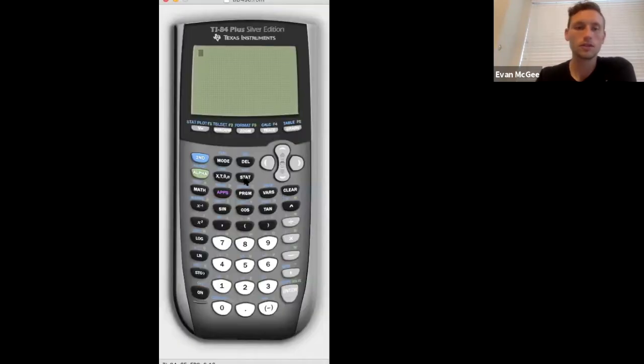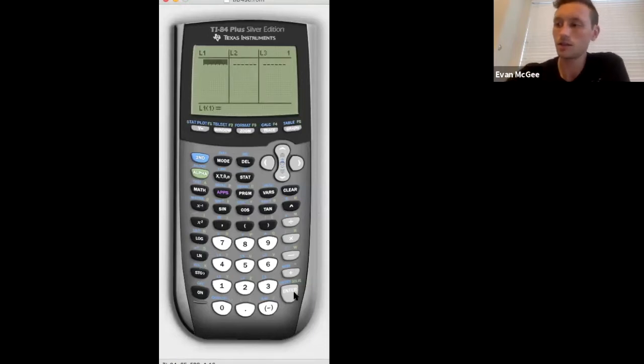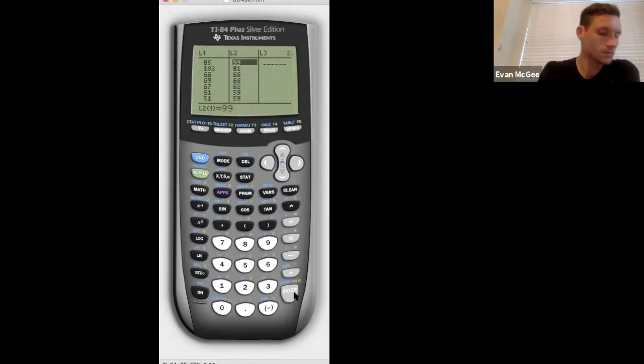In the calculator, go to your list, stat, edit, and start typing in list one and list two. Just remember to make sure that if you remember the table, Liverpool had 85 goals and 99 points, you need to make sure that each team's goals and points are matched up in the calculator.